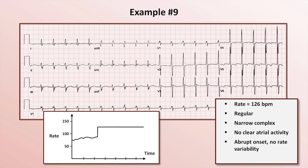So if this isn't sinus tach, what is it? A regular, narrow-complex rhythm with abrupt onset and no variability must be either an SVT or atrial flutter with 2-to-1 block.